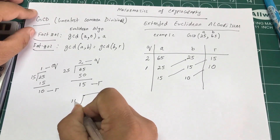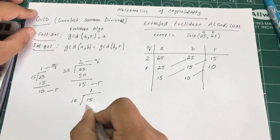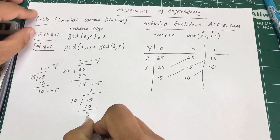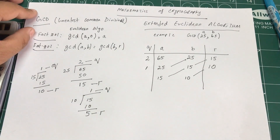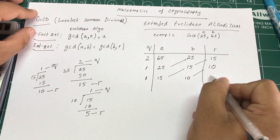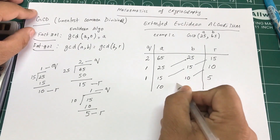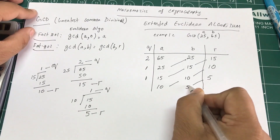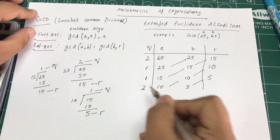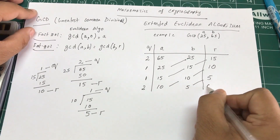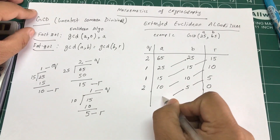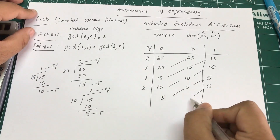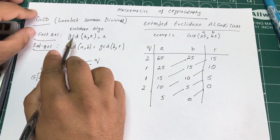Dividing 15 by 10: 10 times 1 is 10, remainder is 5. So the quotient is 1 and the remainder is 5. We bring 10 down as the new A and 5 as the new B. 5 times 2 gives 10, so the remainder is 0.